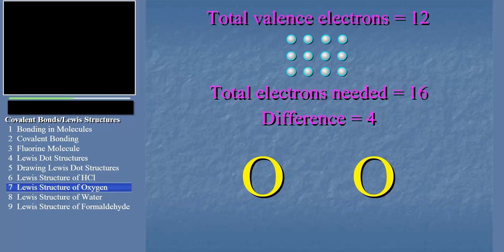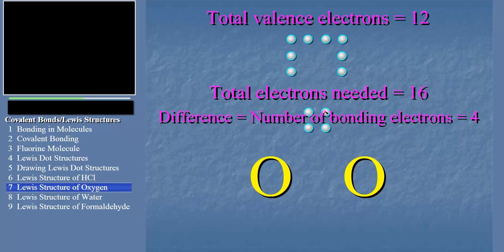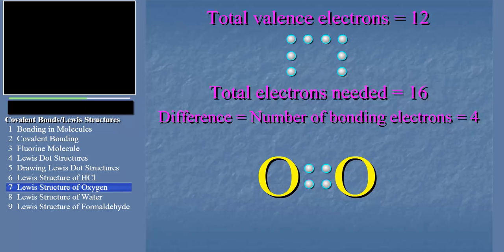Next, we take the difference. And this difference magically gives the number of bonding electrons. That is, electrons that appear in the bonds. Now, we place those four electrons between the oxygens to form the bonds. Note that since two electrons make one bond, four electrons represent two bonds. So, we say oxygen molecules are held together by a double bond.